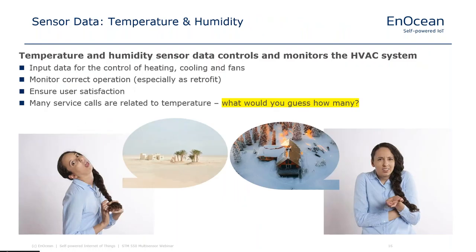In the STM 550, one of the most commonly used sensor types is temperature and humidity. These are some of the most basic things that touch our lives — we feel immediately if a room is warm or cold, if the air is dry or humid. Data from a temperature and humidity sensor monitors and controls HVAC systems to provide a comfortable environment. Many users directly experience issues with temperature and humidity, and many service calls in conference areas are related to this.